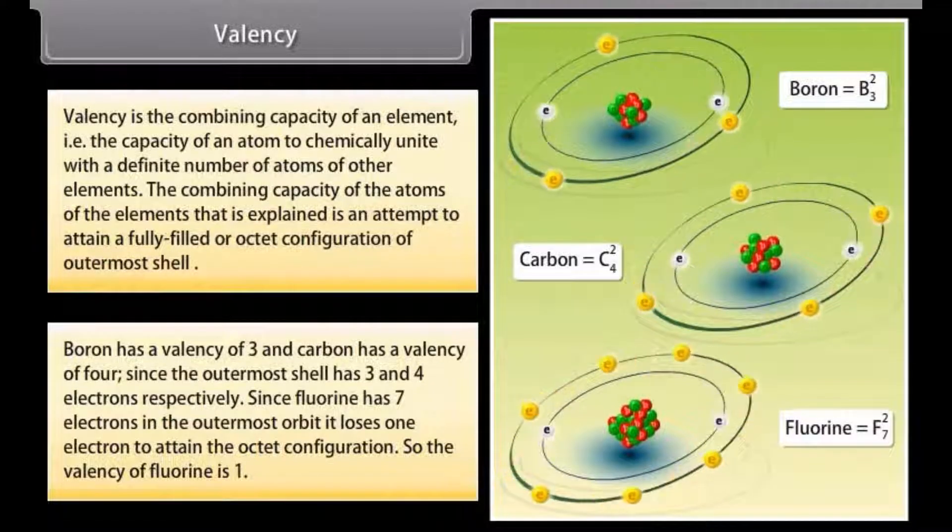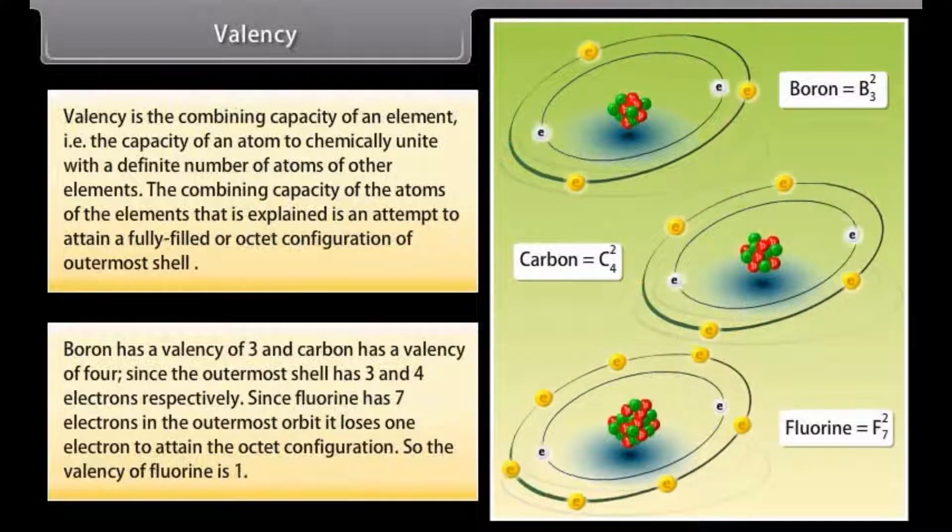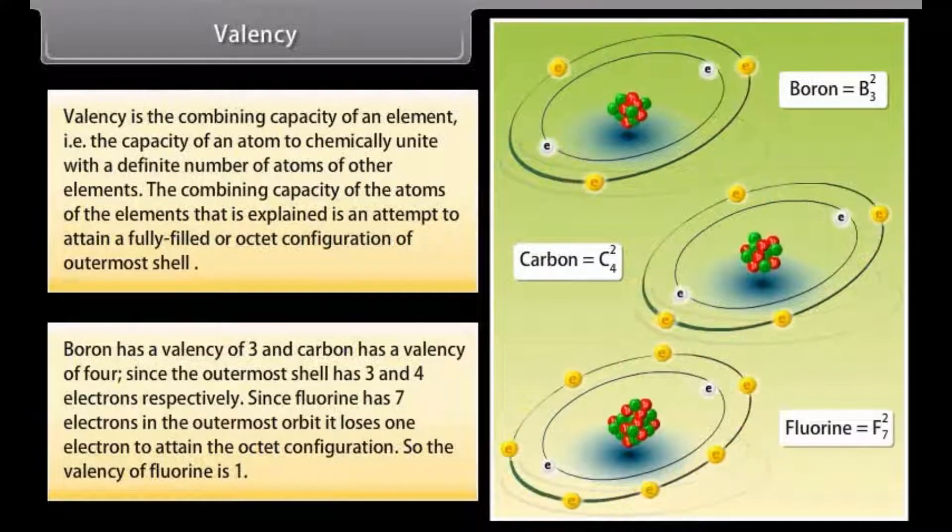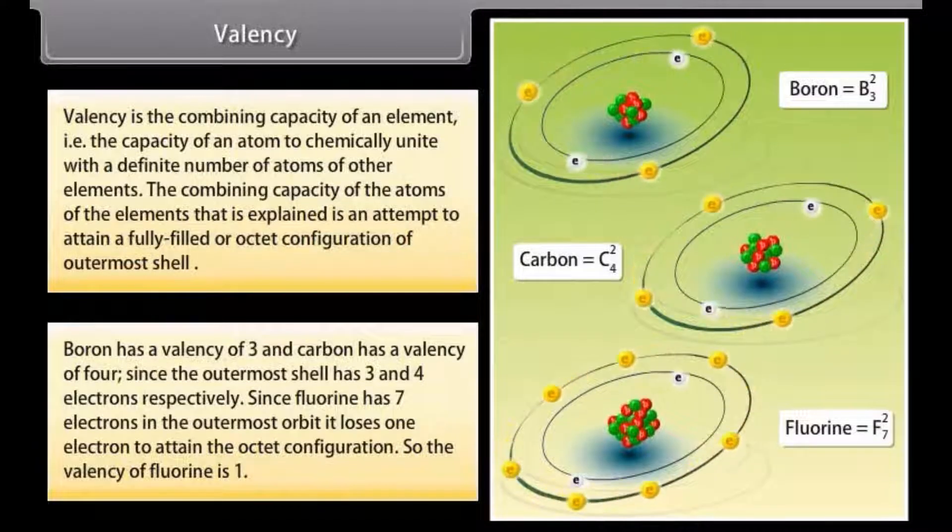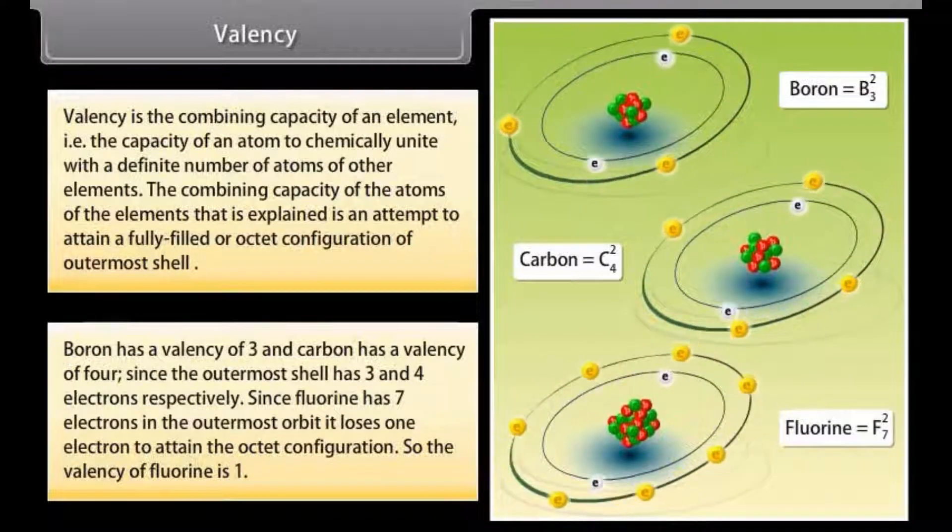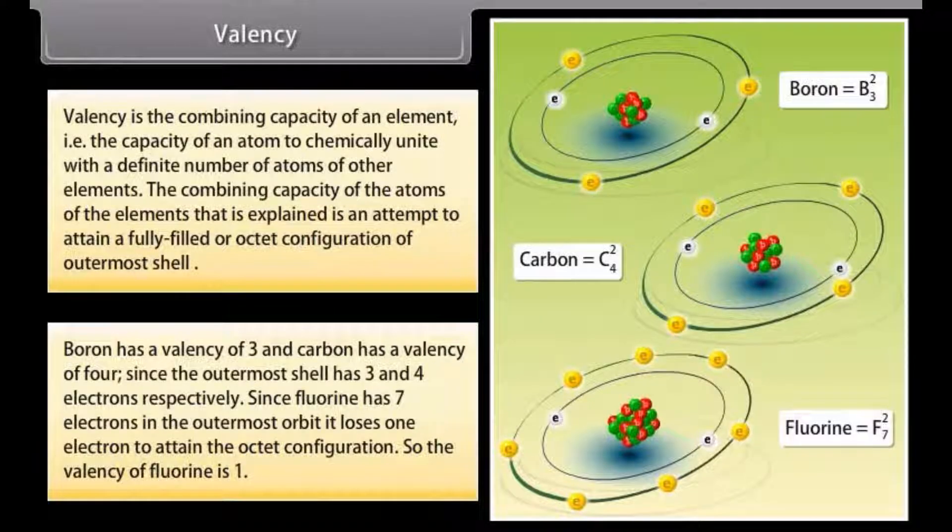Since fluorine has 7 electrons in the outermost orbit, it loses 1 electron to attain the octet configuration. So, the valency of fluorine is 1.